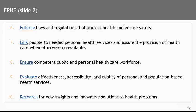Essential public health function number eight is to ensure a competent public and personal health care workforce — not just that people are filling these roles, but that they are competent. This is where public health is instructed to take care of the quality of health care services. Number nine is to evaluate the effectiveness, accessibility, and quality of these services. And number ten, we have to continually do locally relevant research to develop new insights and new solutions for public health problems. These 10 essential public health functions can get forgotten and need to be kept in the forefront of our operational plan.